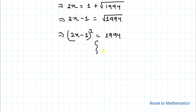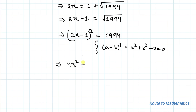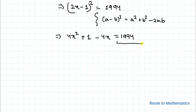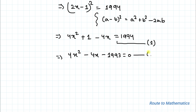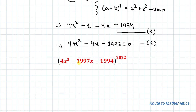Expanding (2x minus 1)² gives us 4x² minus 4x plus 1 equals 1994. Rearranging, this becomes 4x² minus 4x minus 1993 equals 0. Let's take this as equation 2. So we are asked to find the value of 4x³ minus 1997x minus 1994, whole to the power 2022.